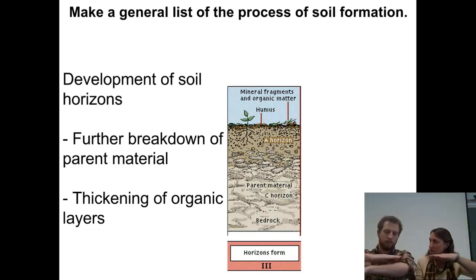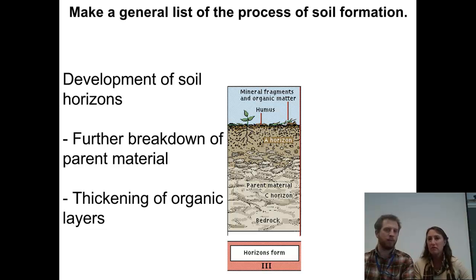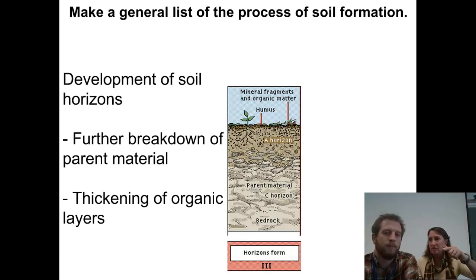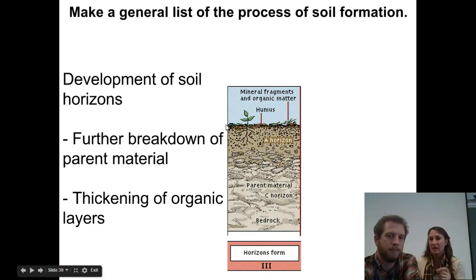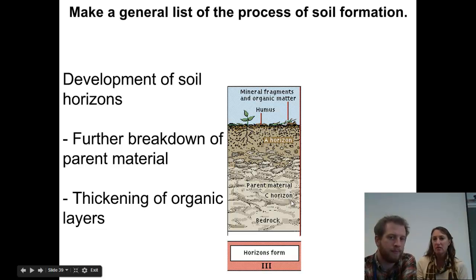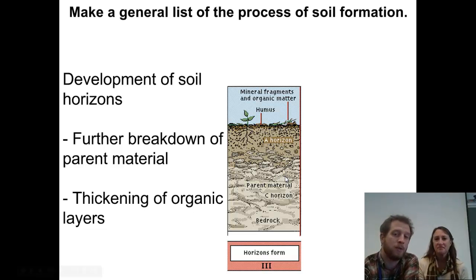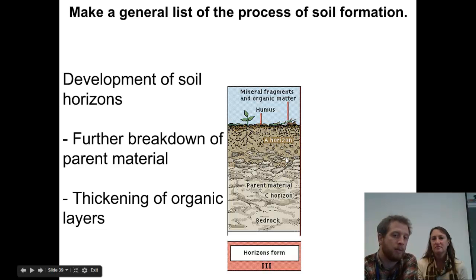Horizons mean horizontal layers that form throughout — what they call a soil profile. We've got the A horizon labeled at the top right now. On top of that, there's a layer of humus, which is the organic material sitting on top. We're also calling the parent material at the bottom the C horizon. You can see that C horizon moving lower and lower over time — it used to be up near the top and it's getting deeper and deeper.